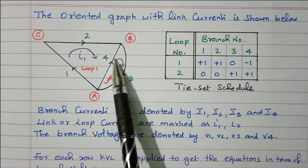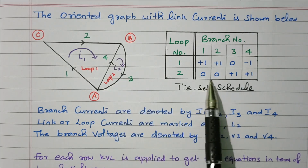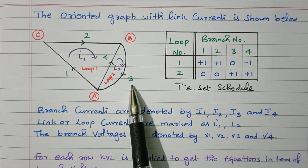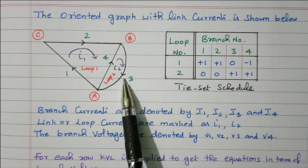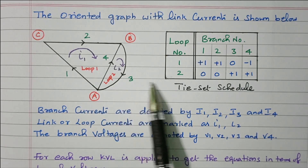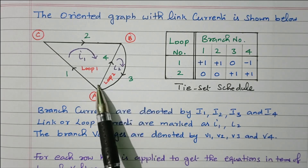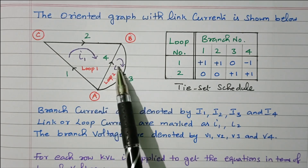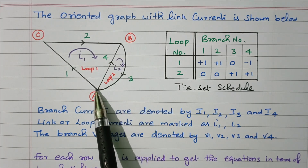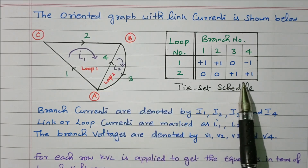For loop 2, only branches 3 and 4 are present; branches 1 and 2 are zero. Branch 3 direction and loop 2 are the same (clockwise): +1. Branch 4 and loop 2 current are also in the same direction: +1. So loop 2 row is: 0, 0, +1, +1.